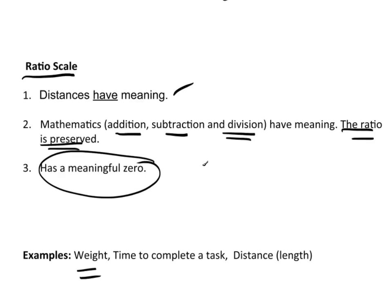As an example, weight. Let's just suppose that I weigh 200 pounds and you weigh 100 pounds. Well, 200 minus 100 is 100. There really is a difference of 100 pounds between our weight. If I take 200, divide it by 100, I get 2. I really am twice as heavy as you are. There's twice as much of me here as there is of you.